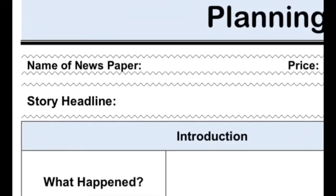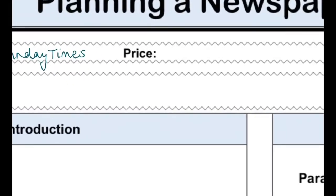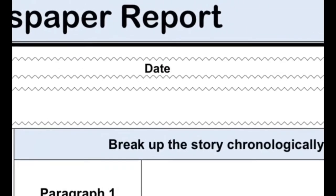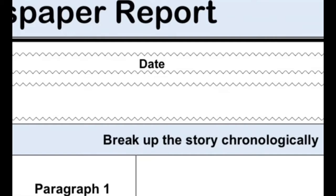At the top of your planning sheet, think of a catchy name for your newspaper. I've put here the SFL Sunday Times. I've set the price at 2.99 because it's a really good quality newspaper, and I've put today's date — obviously I am making this ahead of schedule, so your date will be a bit different to mine.